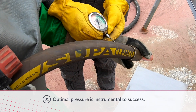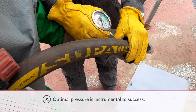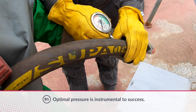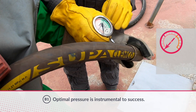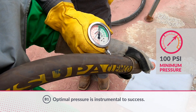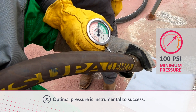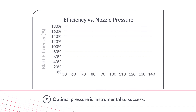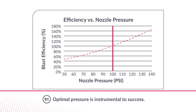To attain 100% efficiency, your nozzle pressure should be set at a minimum of 100 psi, no matter which nozzle size you use. Blasting efficiency drops 1.5% for every 1 psi below 100 at the nozzle. Efficiency increases as nozzle pressure level increases.